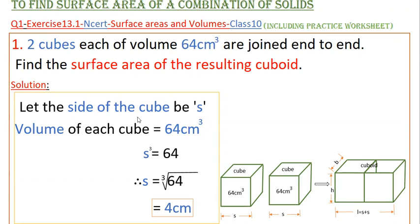First, let the side of the cube be s. Then volume of each cube, that is 64 centimeter cube, equals s³. s³ = 64, then s equals cube root of 64, which equals cube root of 4³. So cube root of 4³ is 4 centimeters. Therefore, the side of the cube is 4 centimeters.